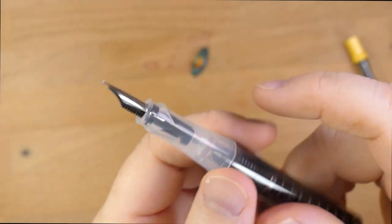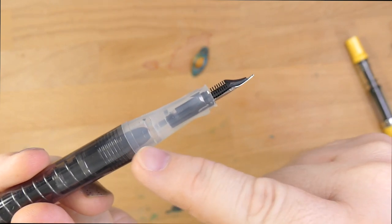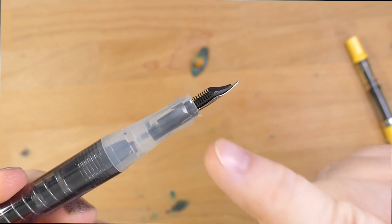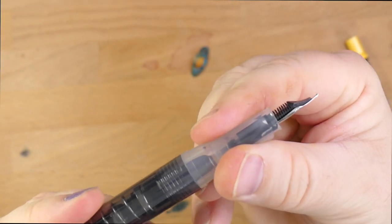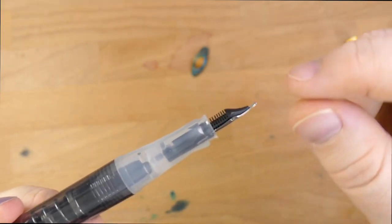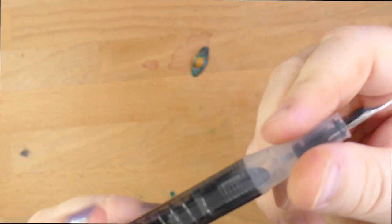You can also, if you need to, you can pull this nib and feed, this whole assembly, you can pull out. If you need to really blast this ink chamber clean, you can put a blunt nose syringe through there if you need to. I don't suggest doing that, because this plastic doesn't feel soft exactly, but I don't know. Too many pullings of this nib might not be great for it, so maybe don't do that too much.